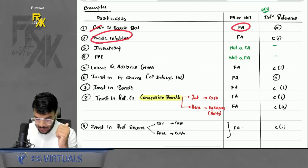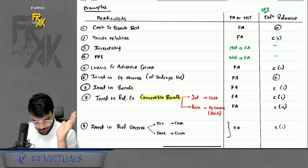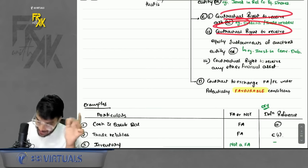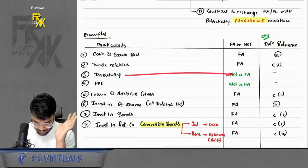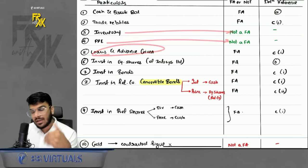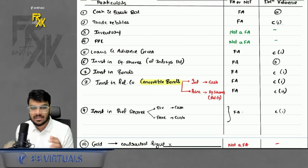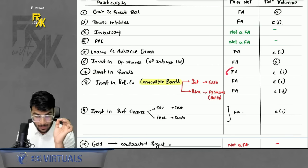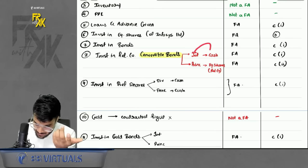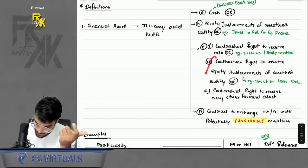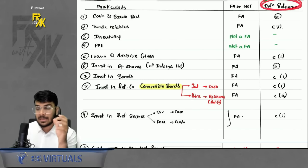Let's quickly run through examples of financial assets. Cash balance — financial asset. Trade receivables — financial asset. Inventory — not a financial asset, because there is no contractual right to receive cash even though it can be converted. Same applies to PPE. Loans and advances given — financial asset. Investment in another company's equity shares — financial asset. Investment in bonds — financial asset.